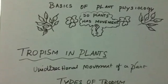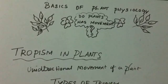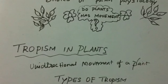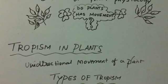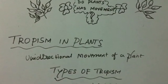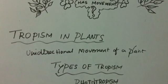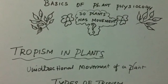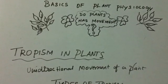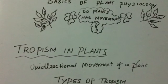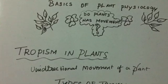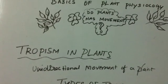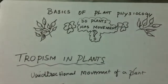The touch-me-not plant closes on touching. These movements are triggered by external stimuli. Unlike animals, plants do not move on their own from one place to another, but they can move their body to get sunlight, water, and nutrients. They are sensitive to external factors like light, gravity, and temperature.